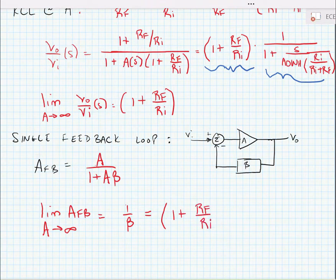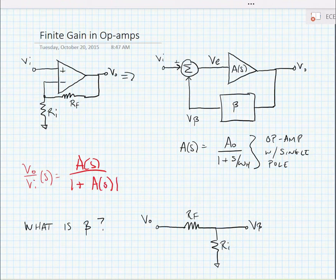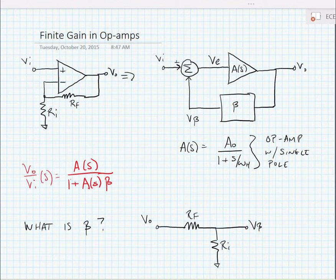Now what if we make that feedback loop frequency dependent? So here we're going to add a frequency dependence factor to the forward amplifier gain, make it A(s). Now we know then that we can just substitute A(s) for A in our prior equation. And again, our substitution for A(s) is going to be an op-amp with a single pole that has a frequency response equal to A₀, the gain at DC, divided by 1 + s/ωh, where ωh is the high frequency pole.